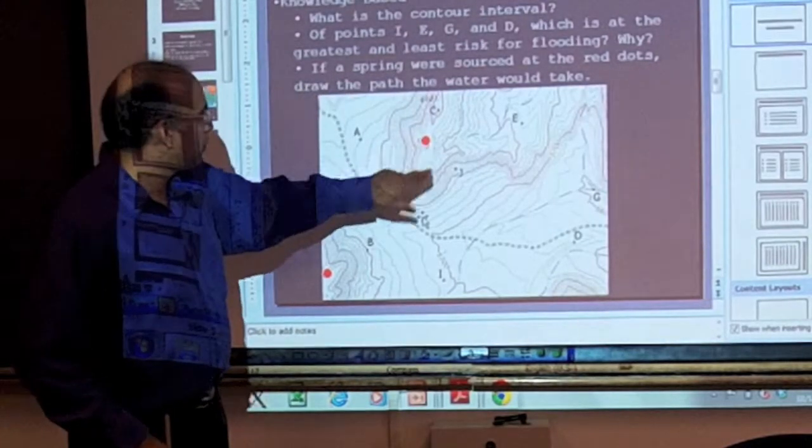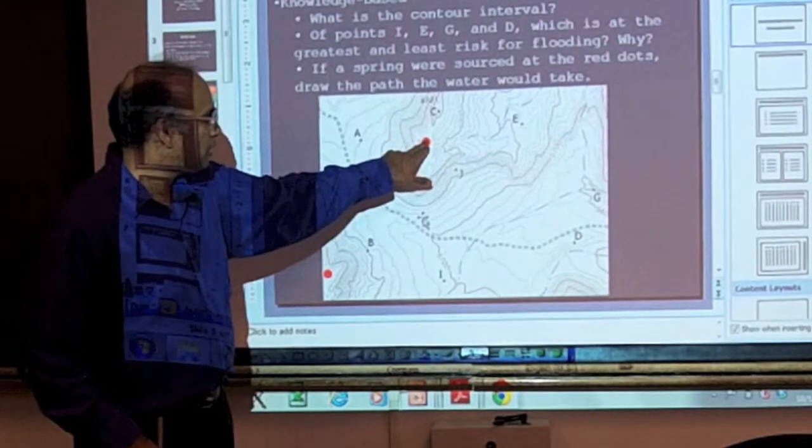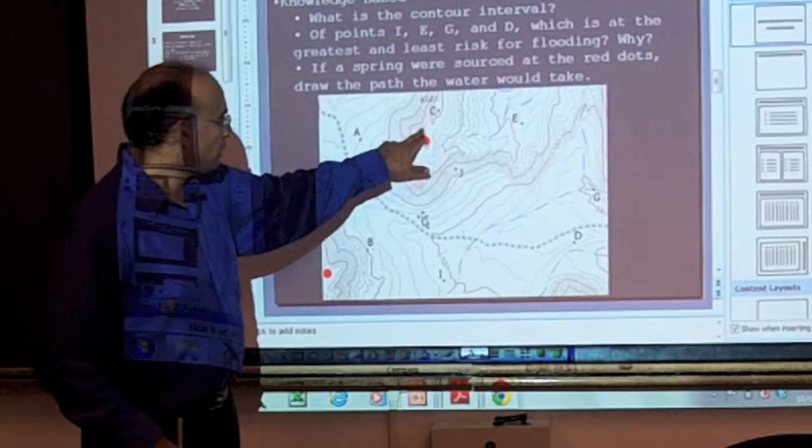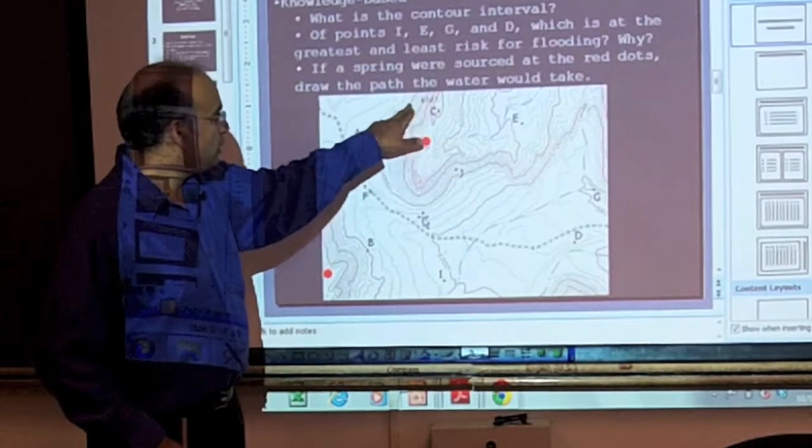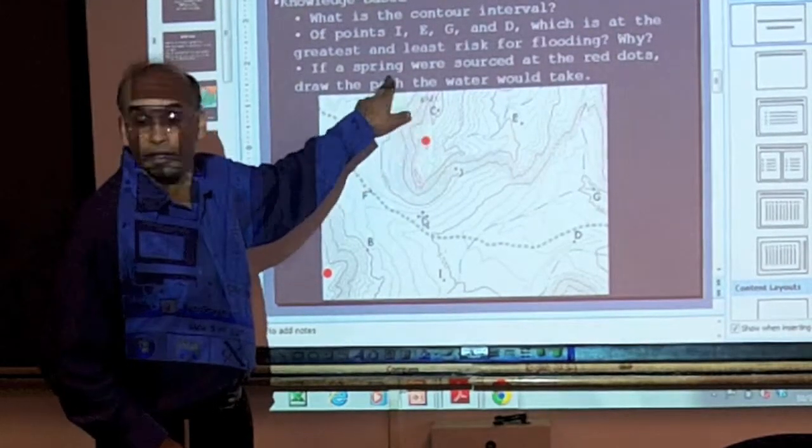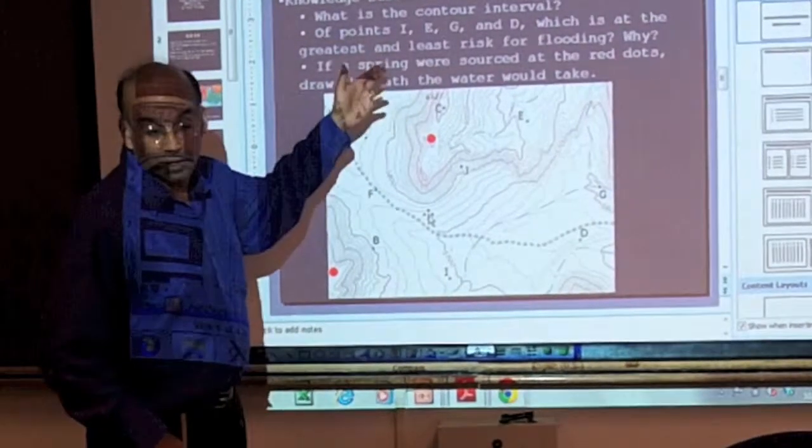If we have a spring at the red dots where the water flow, if we look here, we see there's a V in the contour plots. And this is the indication of a stream cut valley. So if there's a spring here, it's going to flow down that valley.